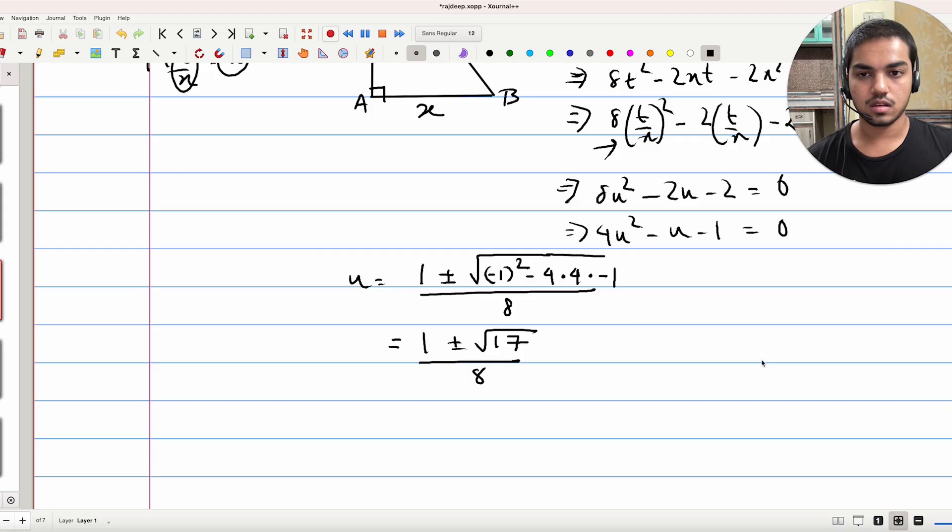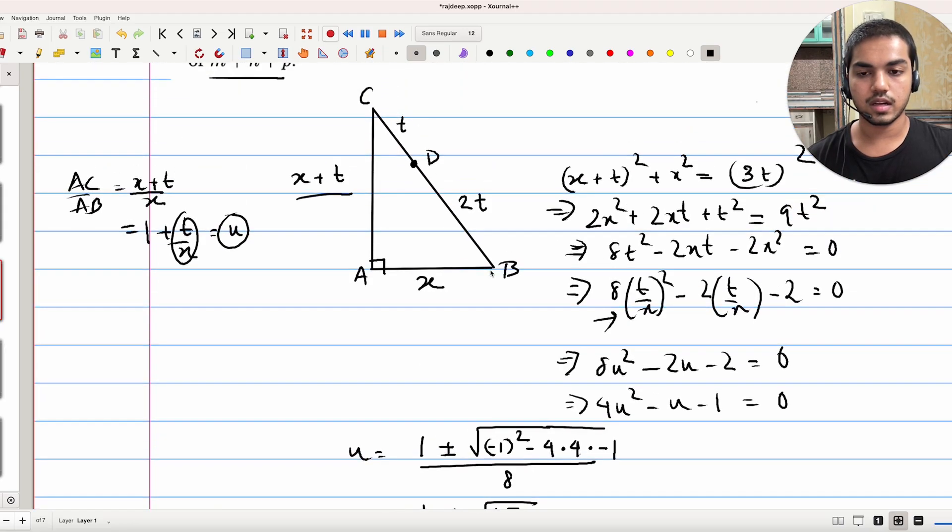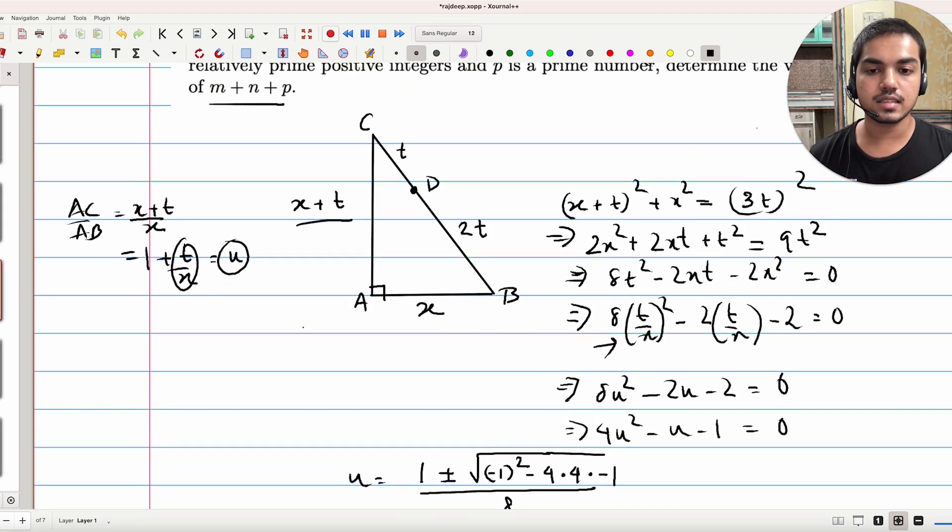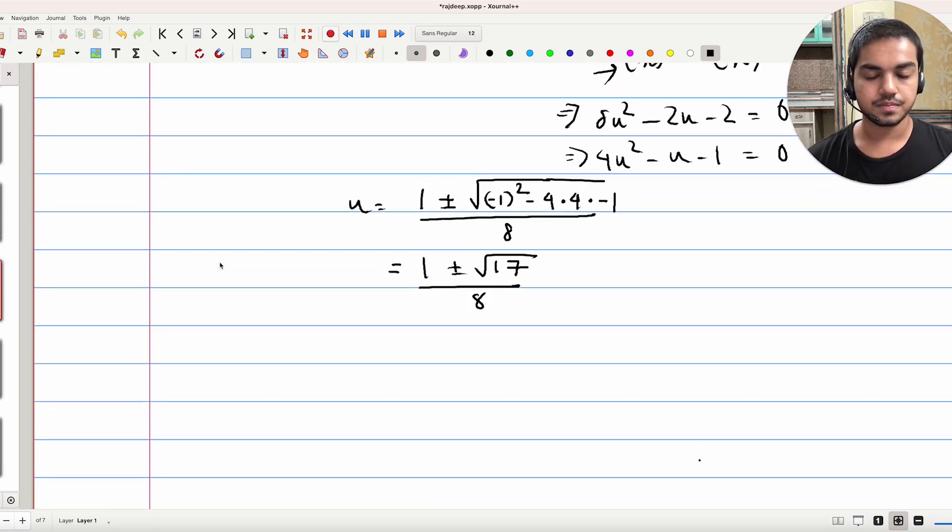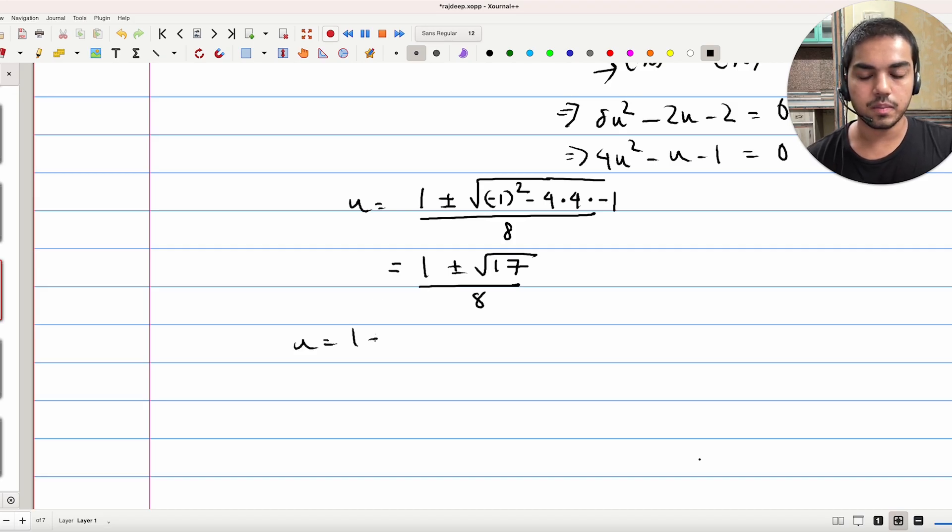Right? If you look at the diagram itself, it's evident that AC is greater than AB. And so this ratio is greater than 1 and so U has to be positive. Right? So we get that U is equal to 1 plus root 17 by 8.